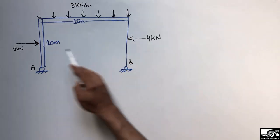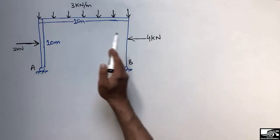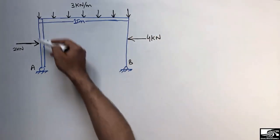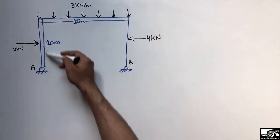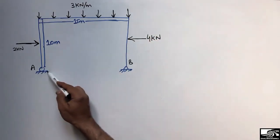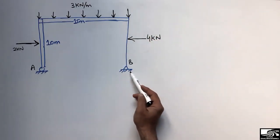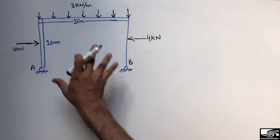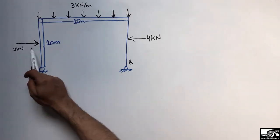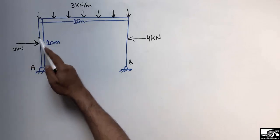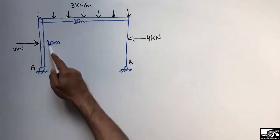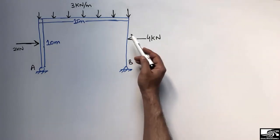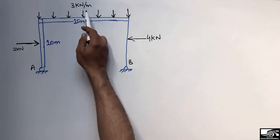The frame has two columns, one on the left and one on the right, with a beam in the center. The beam length is 15 meters while each column has a length of 10 meters. There is one roller support and one hinge support. The loads acting are a lateral load of 2 kN at the middle of the left column, which is 5 meters from the bottom, a 4 kN lateral load on the other column, and a uniformly distributed load of 3 kN/m on the beam.